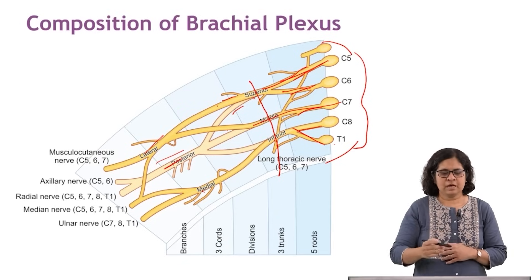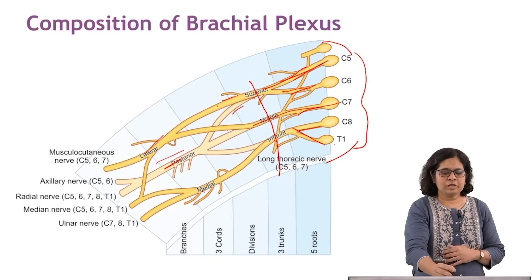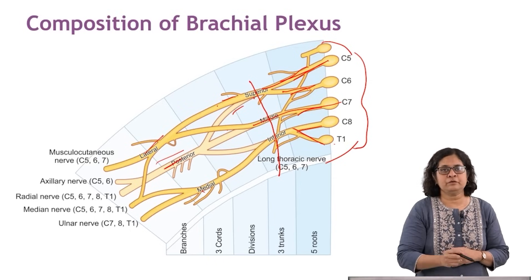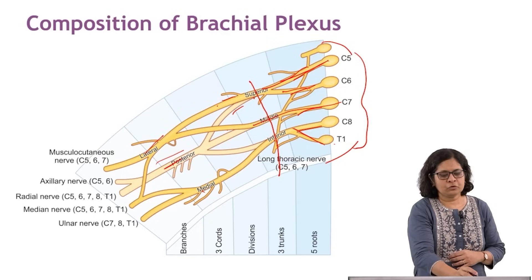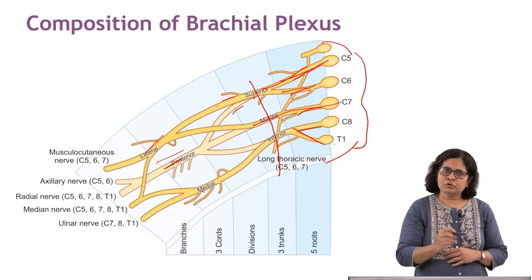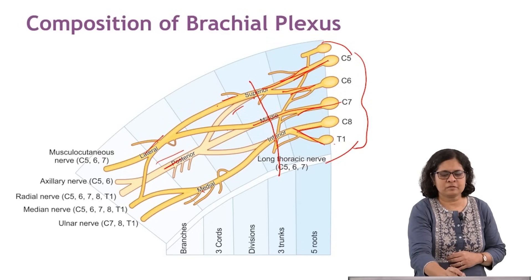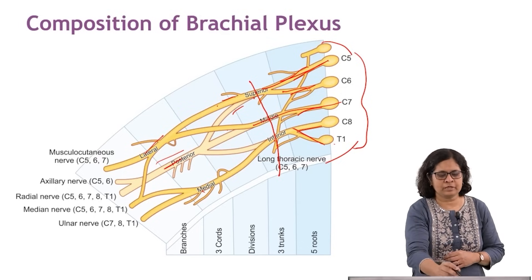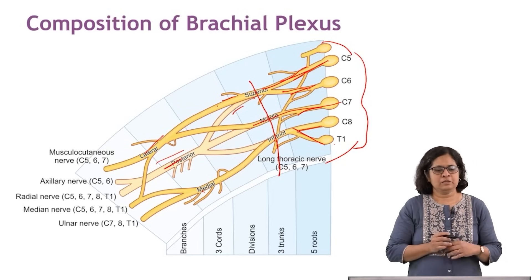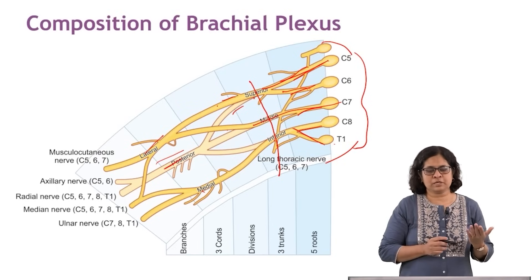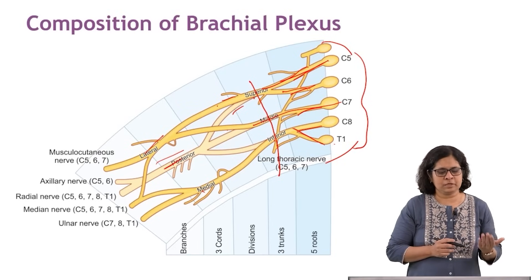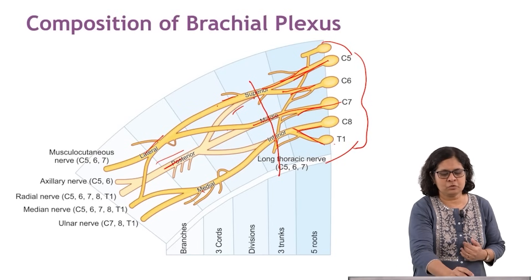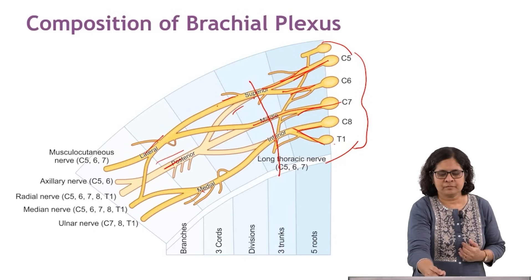Each cord gives rise to individual nerves. To know the root value of a nerve, you trace it back. For example, the musculocutaneous nerve has a root value of C5 and C6, receiving input from those roots.